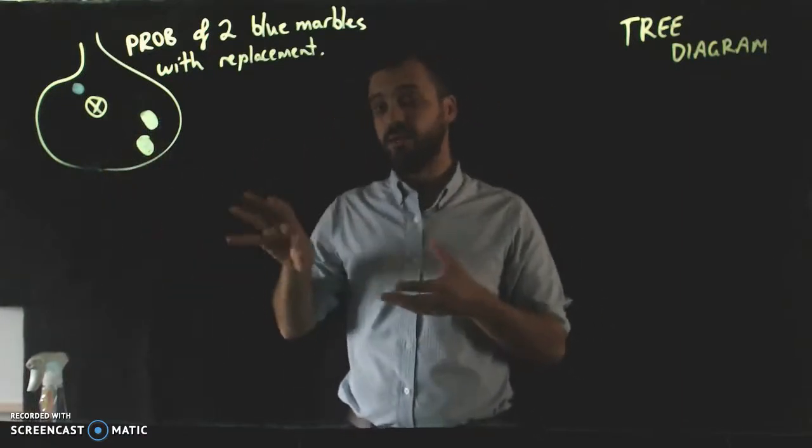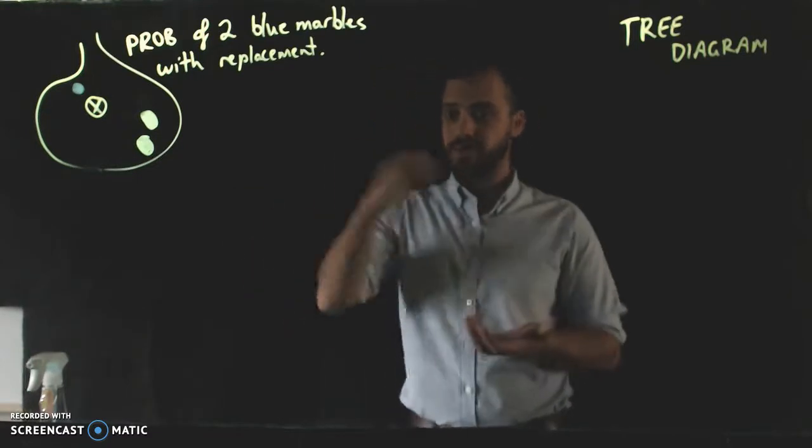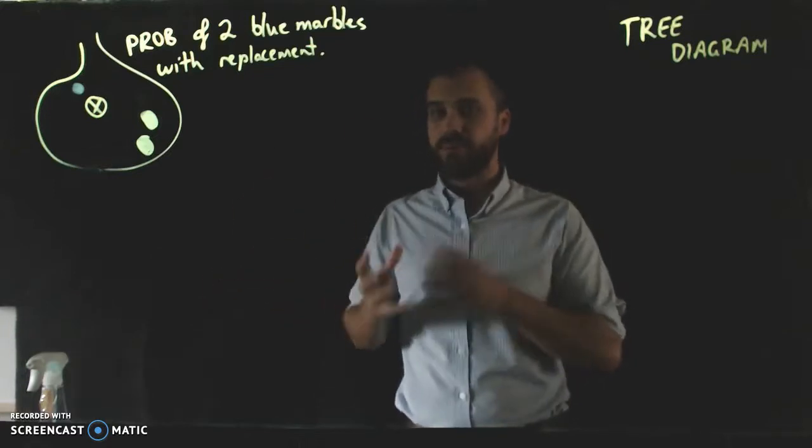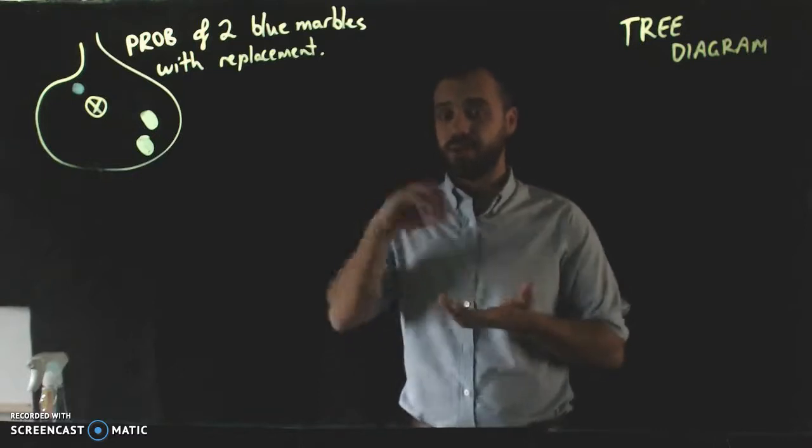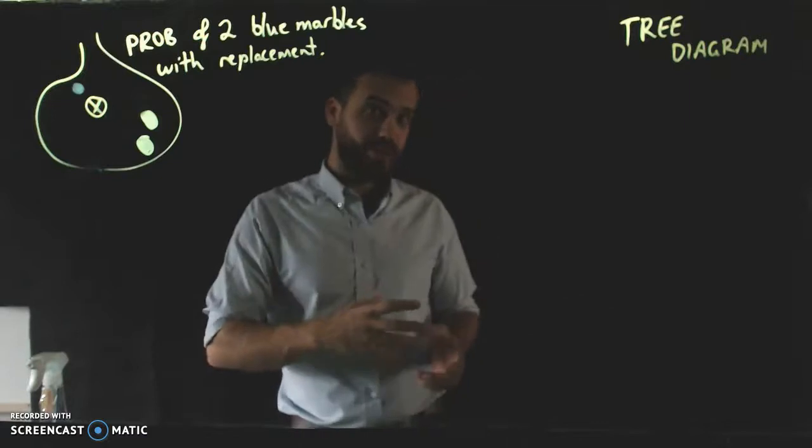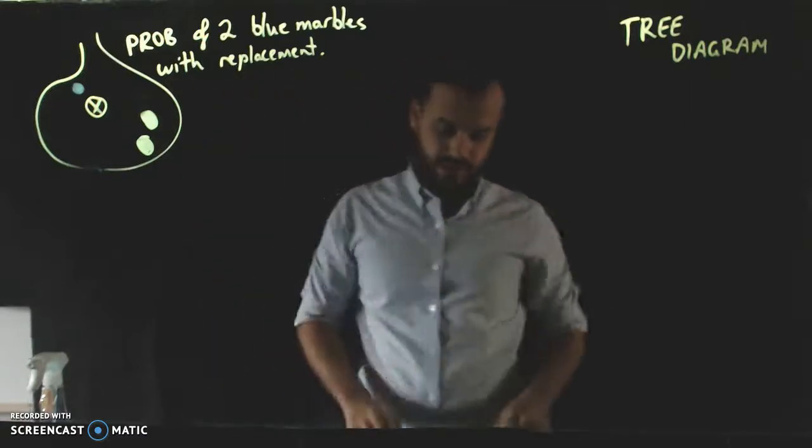And so that's an easier question than the different question, which would be pulling out a marble, putting it aside, pulling out a marble, putting it aside. That's because the probabilities in that one change each time that you do it. Because you're pulling things out, the probability of something happening is changing. But we're going to look at that later on. But right now we're looking at with replacement. It's important that we note that phrase.